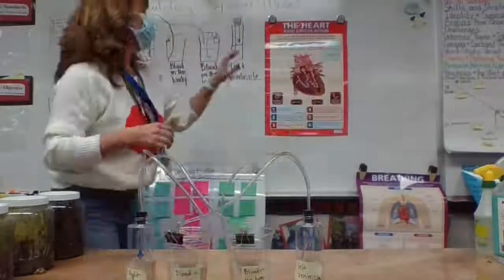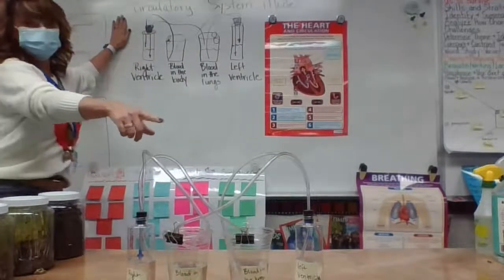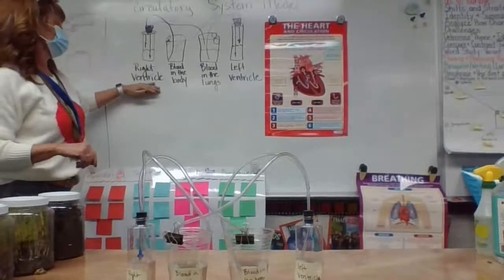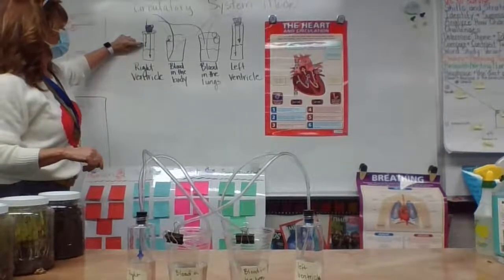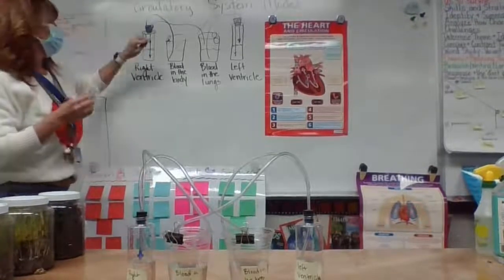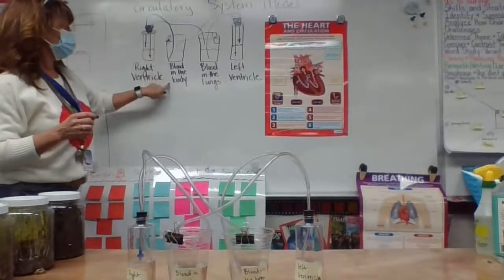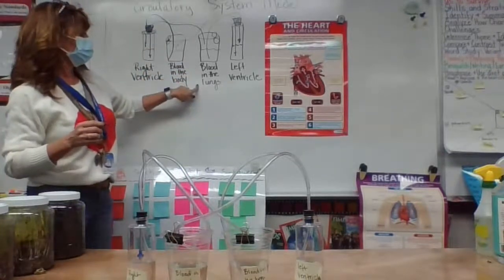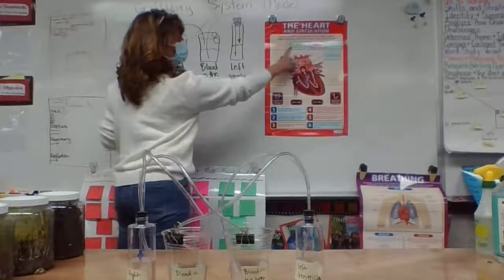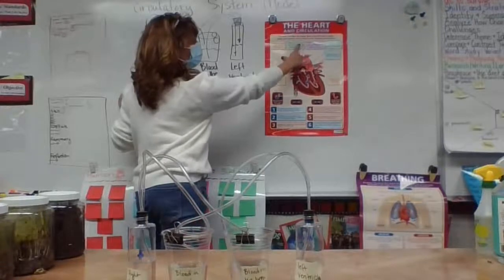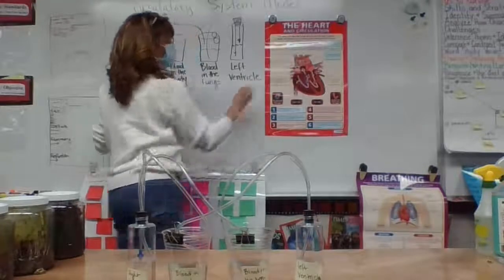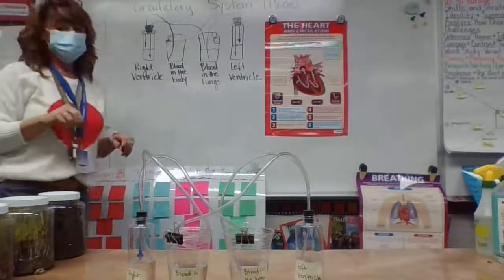So up here we have a model of what we've created down here. This is a circulatory system model. We have a right ventricle, valves sitting on the ends of the tubes, blood in the tubes, blood in the body, blood in the lungs, and the left ventricle. Remember, valves open and close in sequence to allow blood to flow through the heart in one direction only — that's what we've tried to create here.